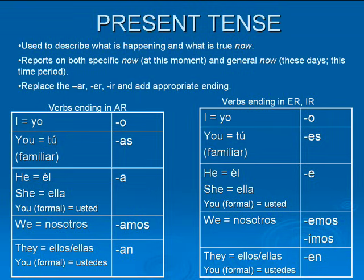Yo hablo. Tú hablas. Él, ella, usted habla. Nosotros hablamos. Ellos, ellas, and ustedes hablan. Now as you can see, there are a couple of ways you can say 'you.' If you're familiar with a person, you use tú. If you're not familiar with a person and it's a formal situation, you use usted.